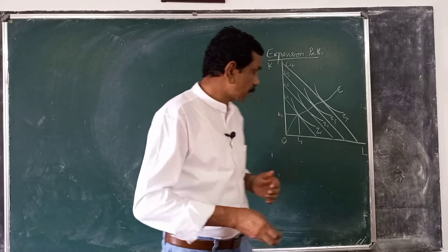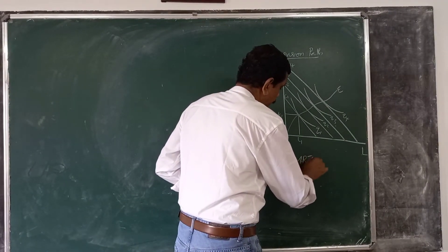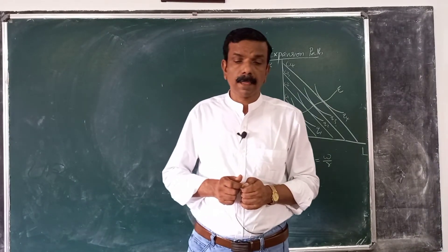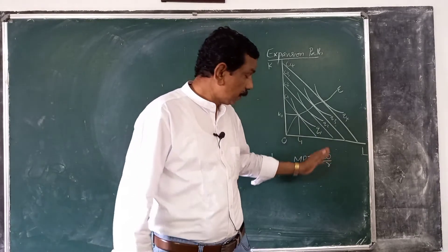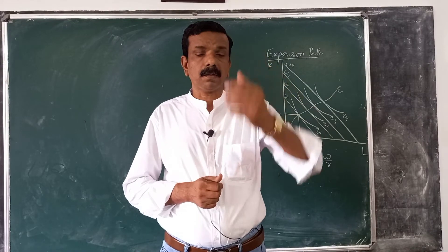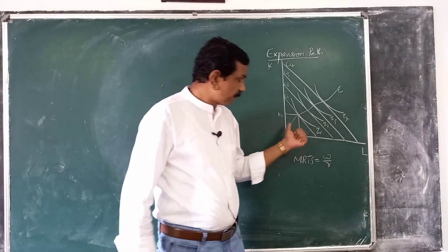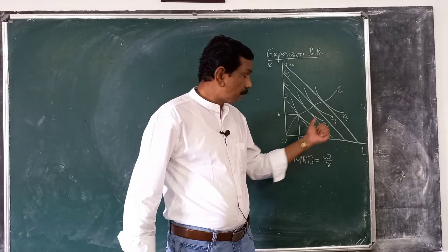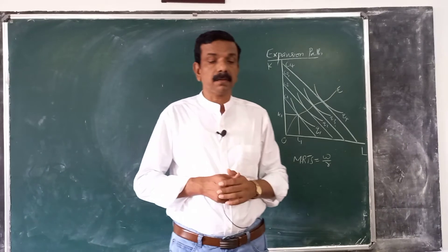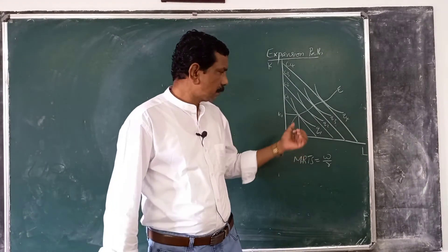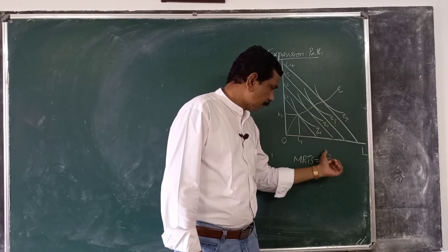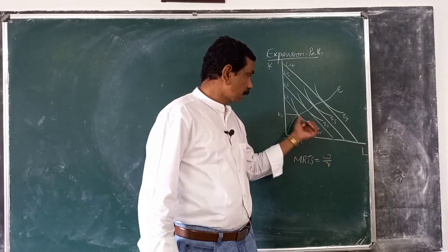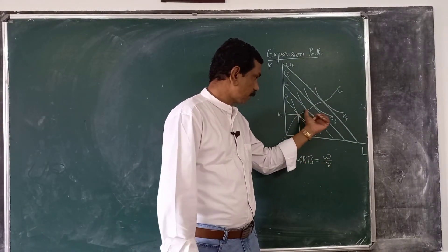Since cost minimization requires that MRTS is always equal to W/R, and W/R is a constant given the factor prices in a competitive market, the shape of the expansion path is determined by where a particular MRTS occurs at successively higher isoquants. The tangency occurs where W/R equals MRTS, so the shape of the expansion path depends on the value of MRTS associated with different levels of output.